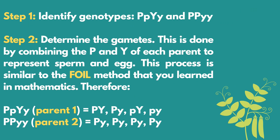Let's apply the steps in solving dihybrid cross. Step 1: Identify the genotypes. Genotype 1 — heterozygous purple flower and heterozygous yellow seed. Genotype 2 — homozygous dominant purple flower and homozygous recessive green seed. Step 2: Determine the gametes by combining the alleles of each parent to represent sperm and egg, similar to the FOIL method in mathematics. Therefore, for parent 1, we have: round yellow, round green, wrinkled yellow, and wrinkled green. And for parent 2, all gametes are round green.